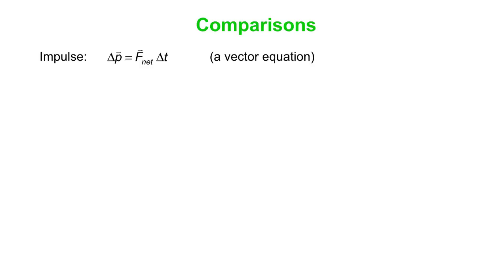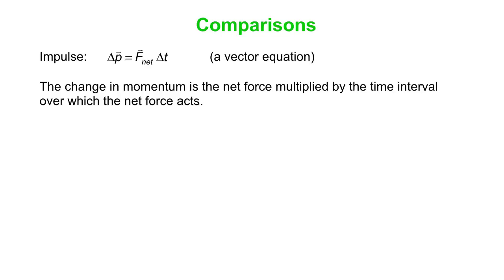We've got the net force multiplied by the time, and that gets your change in momentum, also known as the impulse. In other words, the change in momentum is the net force multiplied by the time interval over which the net force acts. It's also the area under the net force versus time graph. Both the impulse and the change in momentum are synonymous.